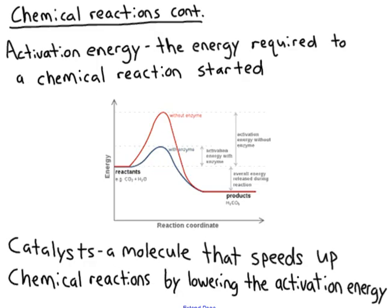The last thing you need to know about chemical reactions is activation energy. Activation energy is the energy required to get a chemical reaction started — every single chemical reaction needs energy to begin. A catalyst is a molecule that speeds up chemical reactions by lowering the activation energy, decreasing the amount of energy needed to make a reaction go.